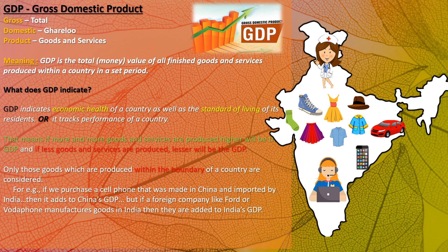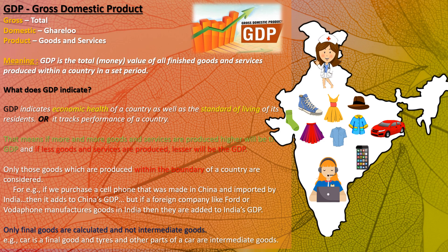But if a foreign company like Ford or Vodafone manufactures goods in India, then they are added to India's GDP. Only final goods are calculated and not intermediate goods. For example, a car is a final good, while tires and other parts of a car are intermediate goods.